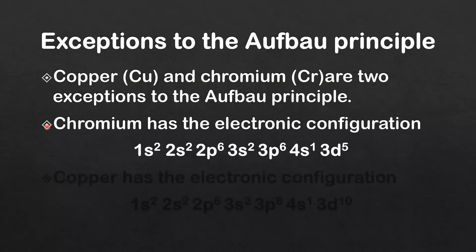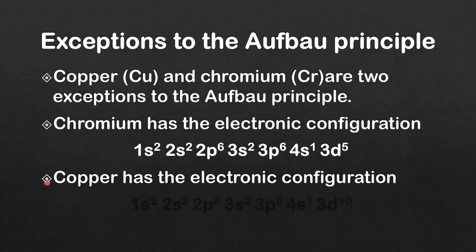Chromium has the electronic configuration 1s2, 2s2, 2p6, 3s2, 3p6, 4s1, 3d5. So chromium has a half full d sublevel.